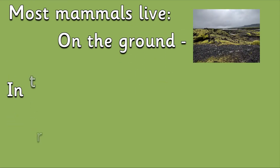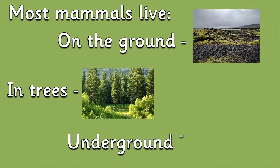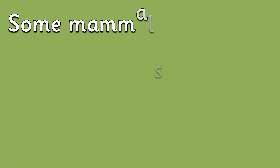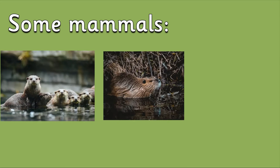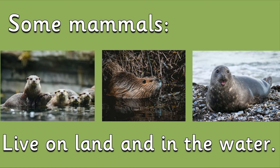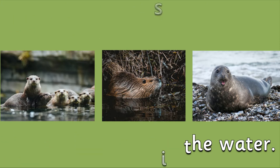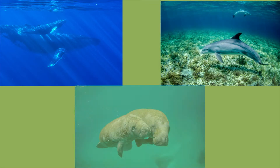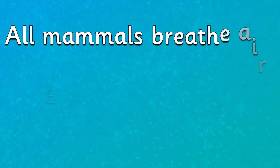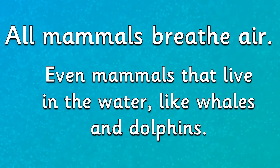But most mammals live on the ground, in trees, or even underground. Some mammals, including otters, beavers and seals, live on land and in the water. Whales, dolphins and manatees are mammals that spend their whole life in the water. All mammals breathe air — even mammals that live in the water, like whales and dolphins, need to come to the surface to breathe.